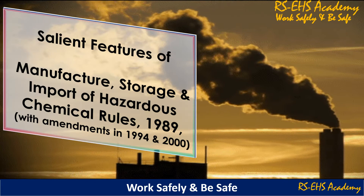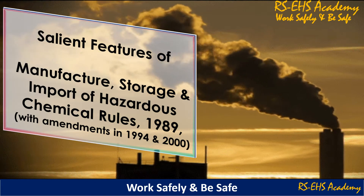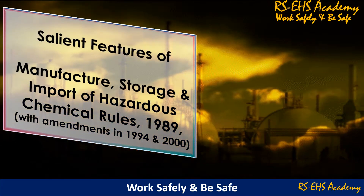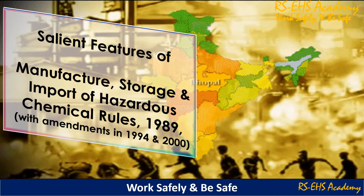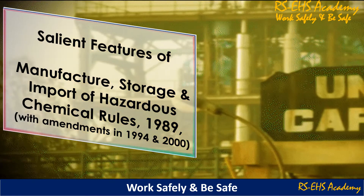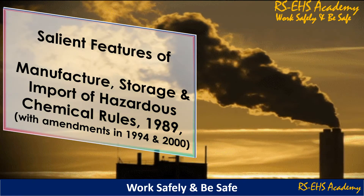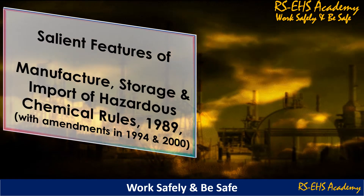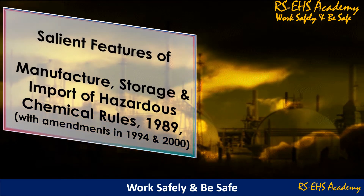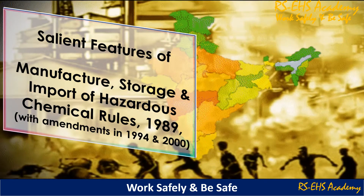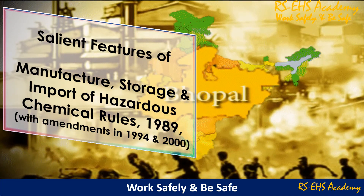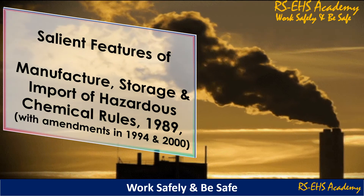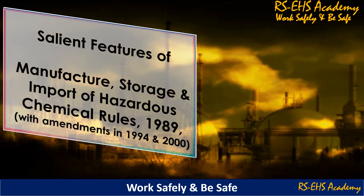The objective of this rule: it was formed under the Environment Protection Act, providing procedures and safeguards for handling of hazardous chemicals at a site — i.e. industry, isolated storage, pipeline — and lays down requirements for the industry and authorities to manage chemical emergencies.